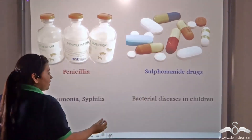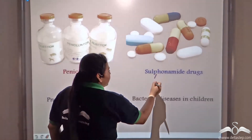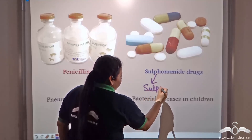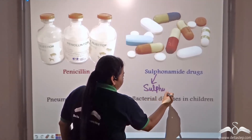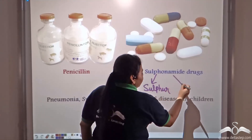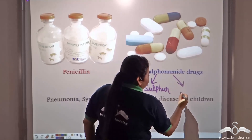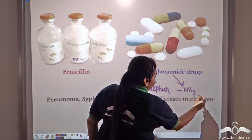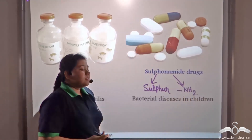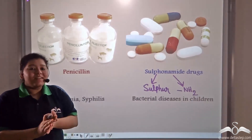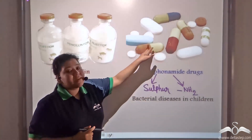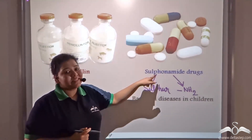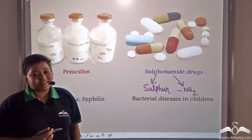Sulfo — from the name you can understand it contains sulfur. Yes, sulfo comes from the word sulfur, and amide is a NH2 group. So together, these pills are formed which are known as sulfonamide drugs.